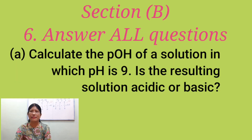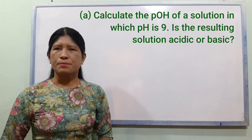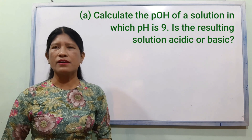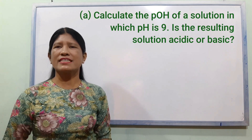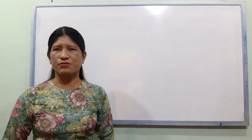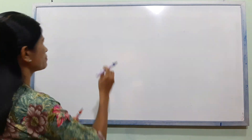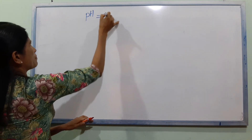Number A: Calculate the pOH of a solution in which the pH is 9. Is the resulting solution acidic or basic?